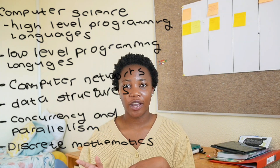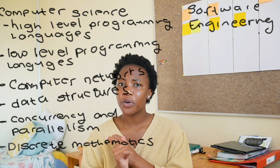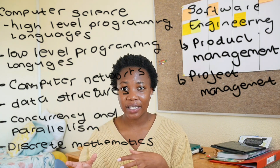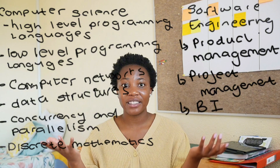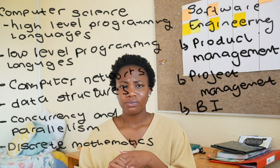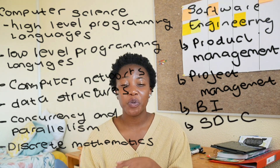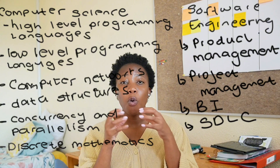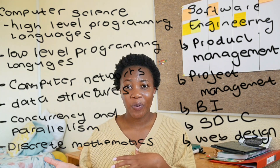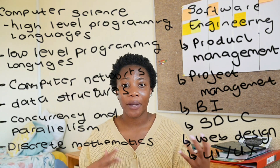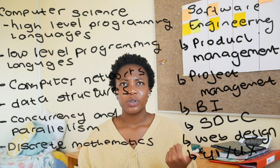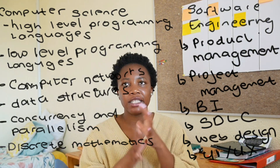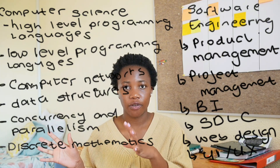In software engineering, you learn things like product management and project management, business intelligence — how businesses use computers to advance their sales — the software development life cycle, web design, UI/UX design, cybersecurity, and machine learning, though these are covered more in terms of theory.